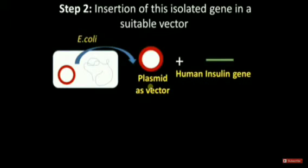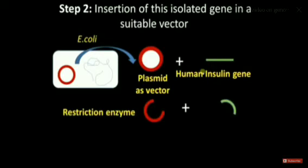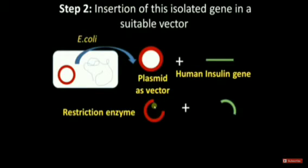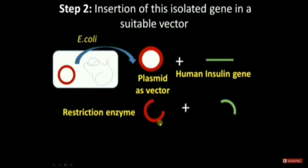This is our gene of interest — the human insulin gene — that was cut from the DNA fragment using a restriction enzyme. This enzyme acts like scissors: it recognizes a specific base sequence and cuts the DNA at a specific point. The same restriction enzyme is also used to cut open the plasmid.